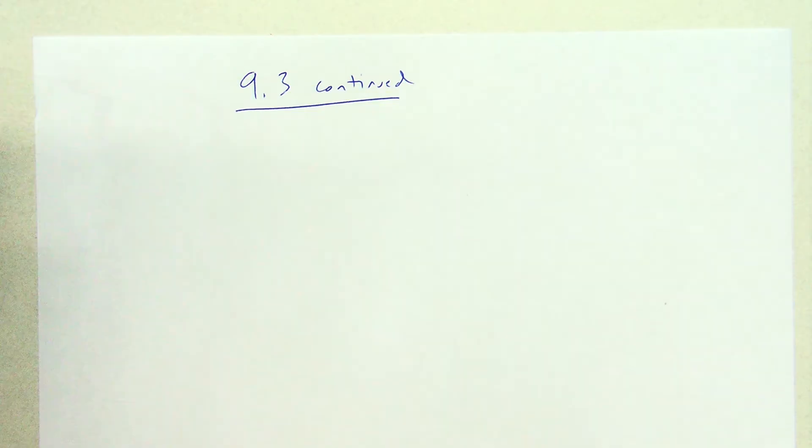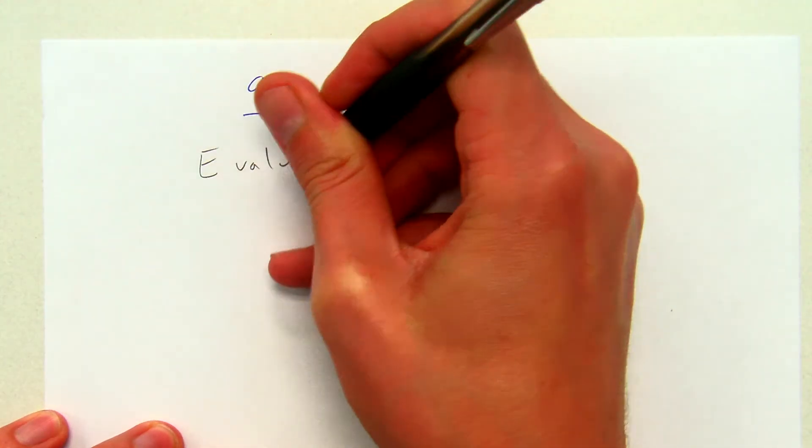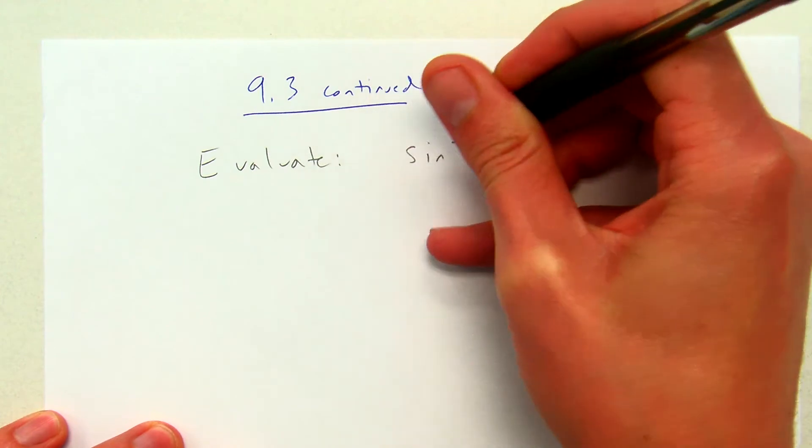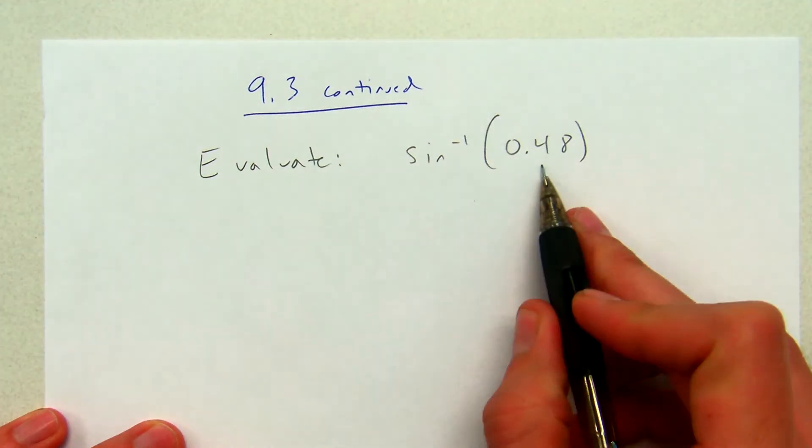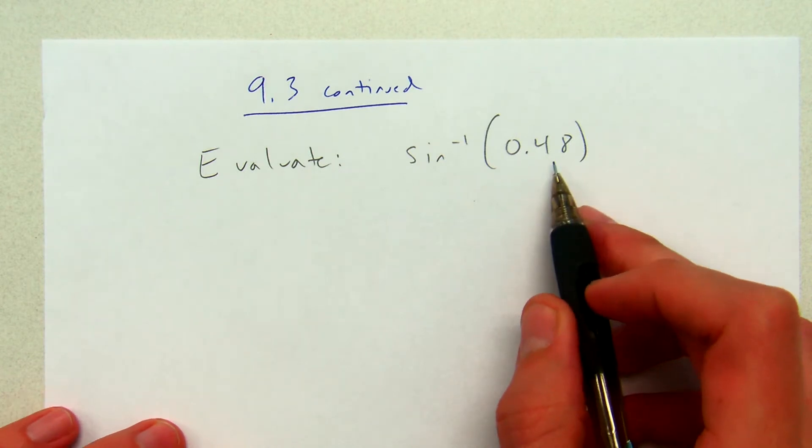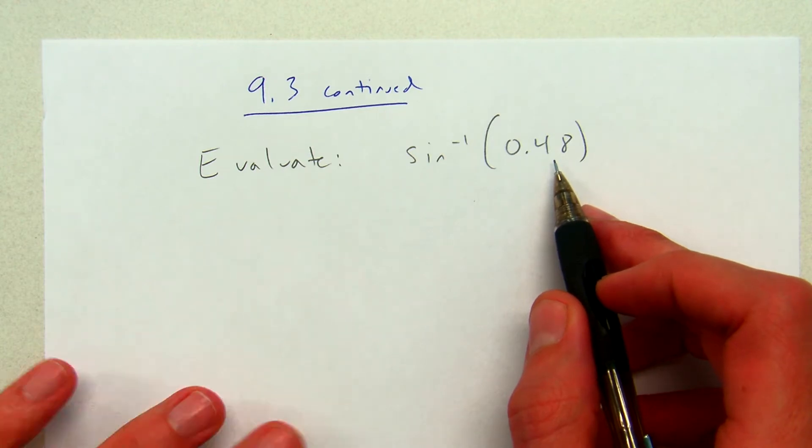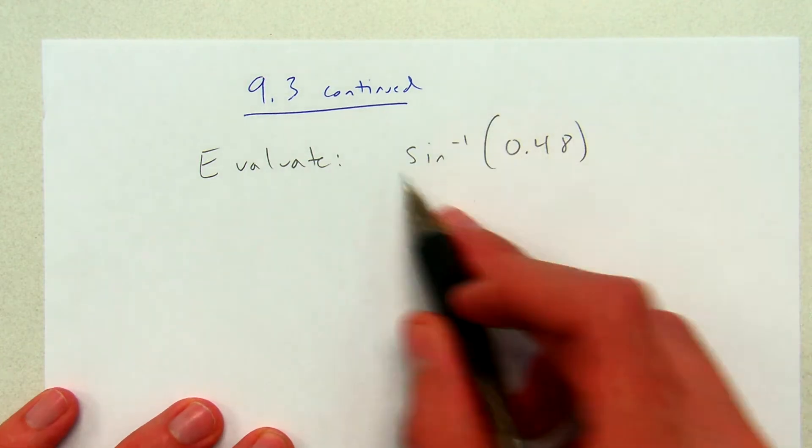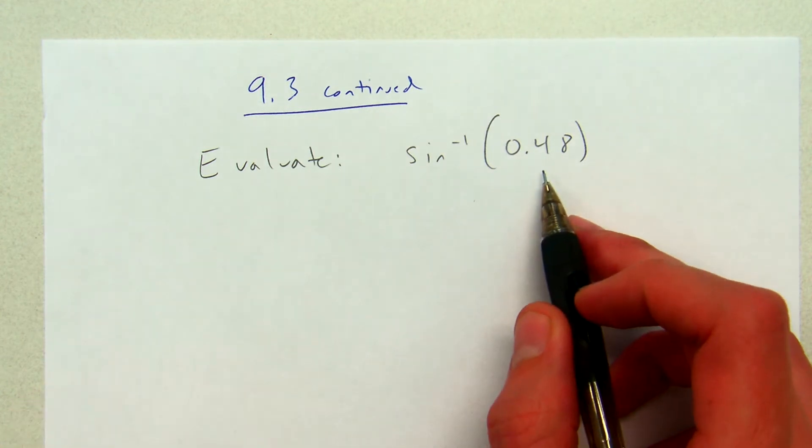So if I'm asked to evaluate inverse sine of 0.48, 0.48 is not a number that I recognize getting from a 30-60-90 or a 45-45-90, right? So instead I'll need to use my calculator. I'll be really clear on tests and quizzes when I need you to use your calculator and when I don't want you to. This is a problem where we're going to use our calculator.